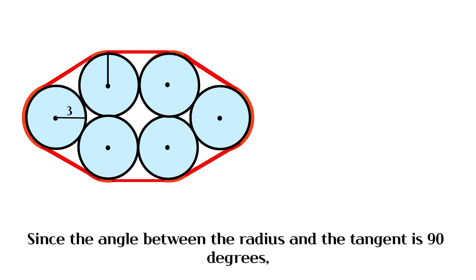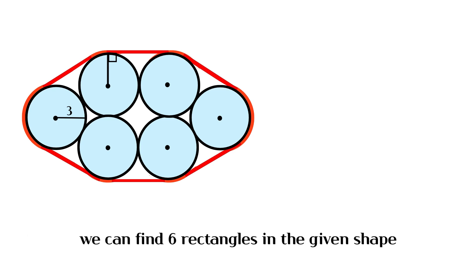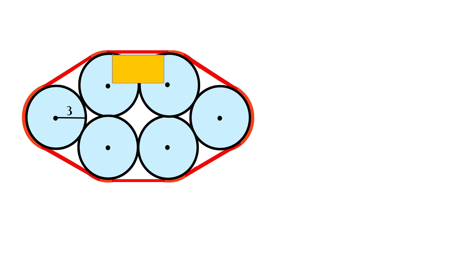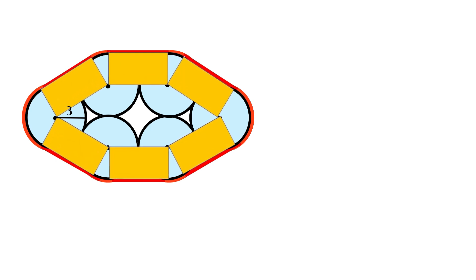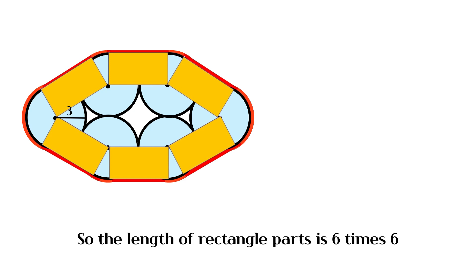Since the angle between the radius and the tangent is 90 degrees, we can find six rectangles in the given shape. So the length of the rectangle parts is 6 times 6.